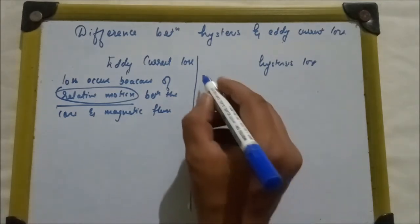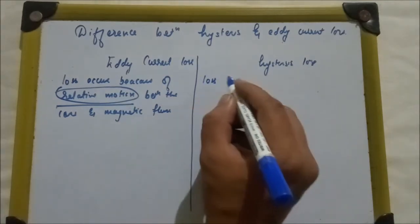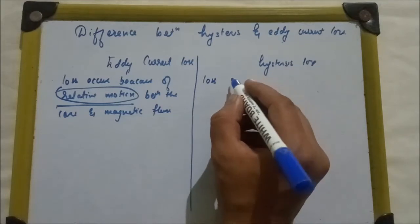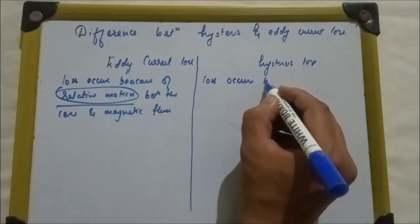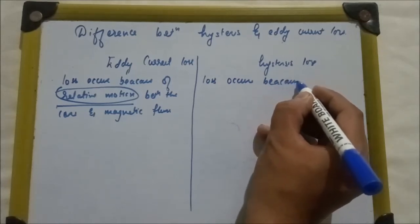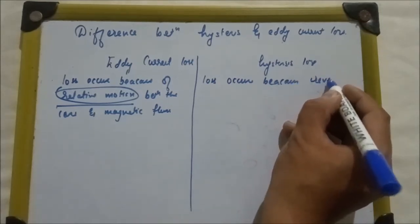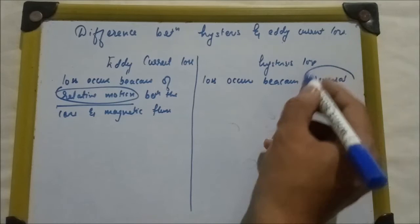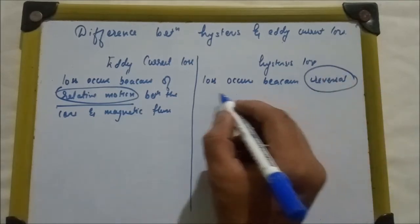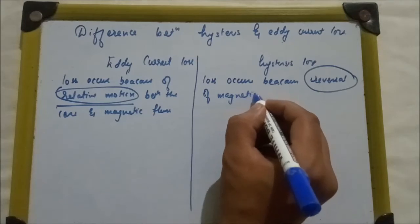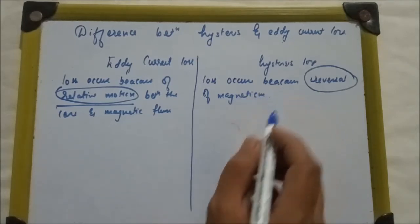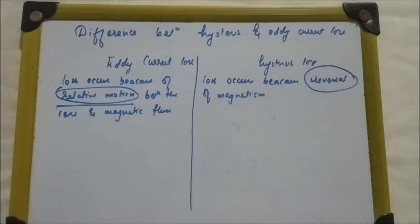Now hysteresis loss. The loss occurs because of reversal. This point is also important, reversal of magnetism. Reversal of magnetism is what causes these losses. It can be easily understood by the BH curve.